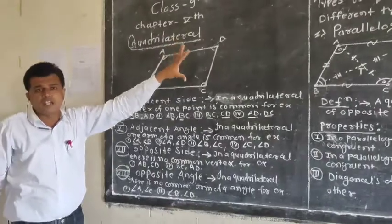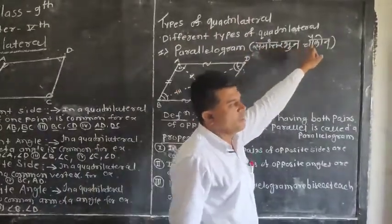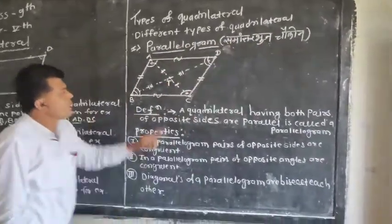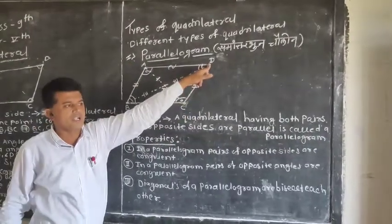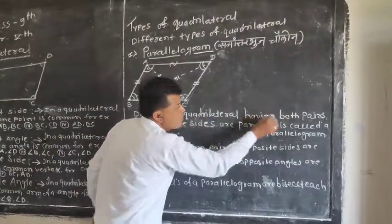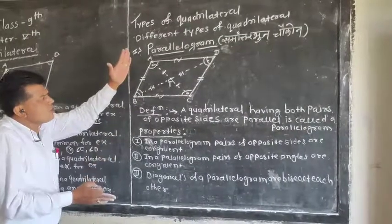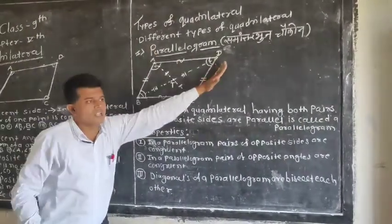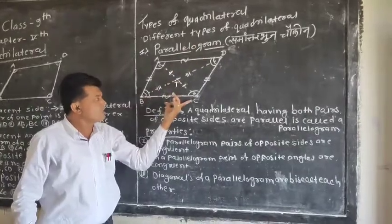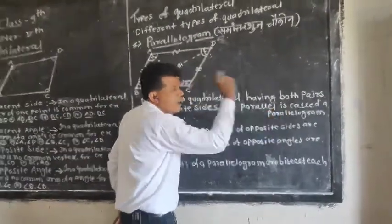These concepts about the quadrilateral are important for this chapter. There are different types of quadrilaterals. The first type is a parallelogram. The definition of a parallelogram: a quadrilateral having both pairs of opposite sides parallel is called a parallelogram. So AB is parallel to CD, and BC is parallel to AD.